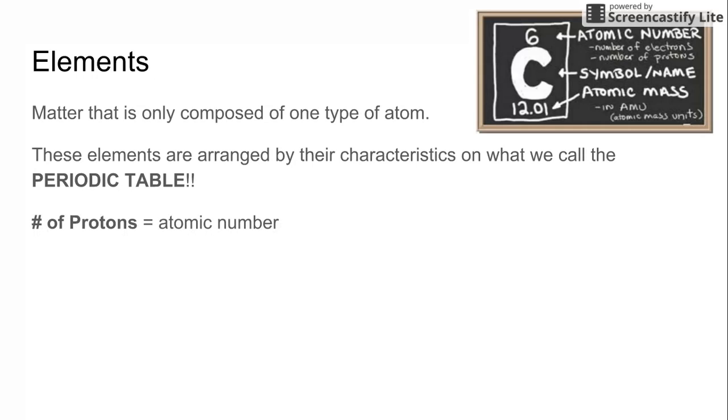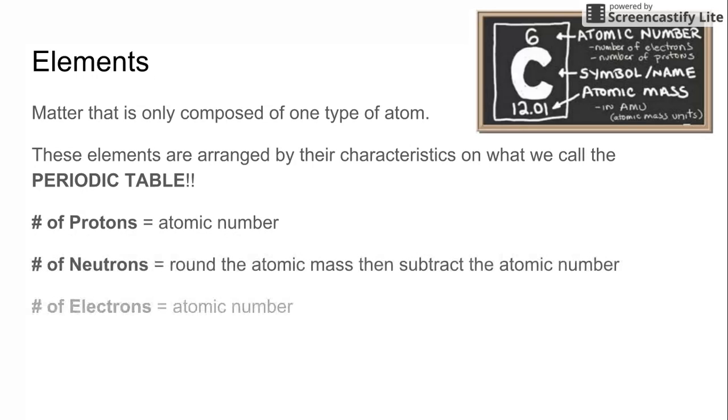So some things to notice about the periodic table. First, I want you to look at this picture up in the right-hand part of the screen. You have the atomic number, which is six. This is like your jersey number of the element. So just like you know the number of your favorite quarterback or your favorite point guard, you would know and you can identify them by that number. You can identify the element by this atomic number or this jersey number. And this atomic number is also telling you the number of electrons and the number of protons.